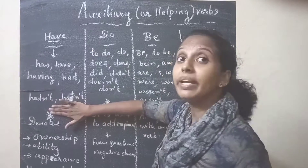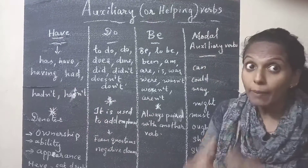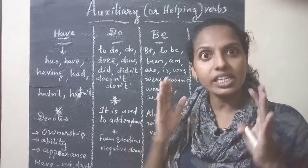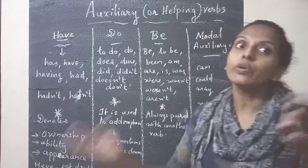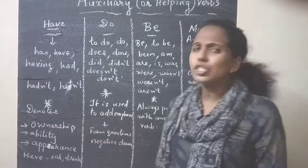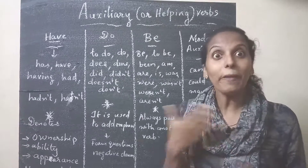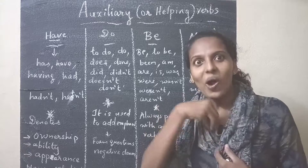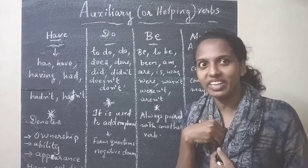Auxiliary verbs, or helping verbs, can also be used as the main verb. 'Have' can be used as both a main verb and a helping verb. When used as a main verb, it denotes ownership — for example, 'I have a pen,' meaning I am the owner of the pen.